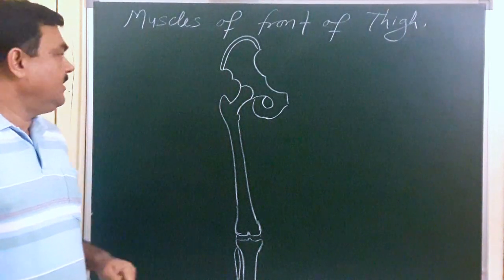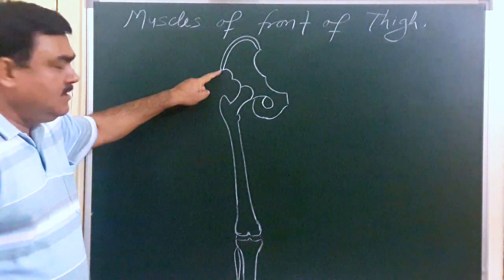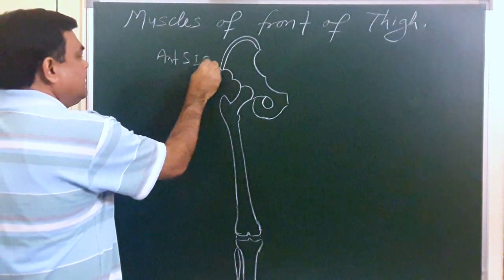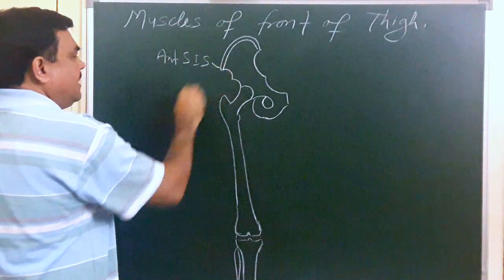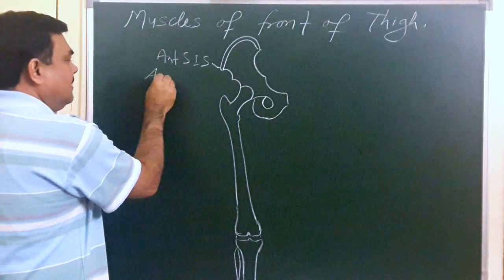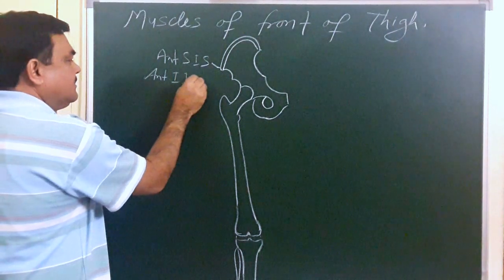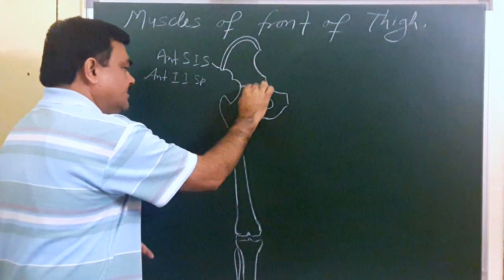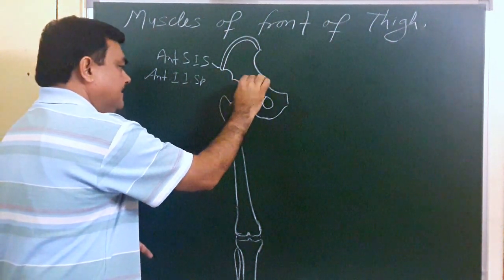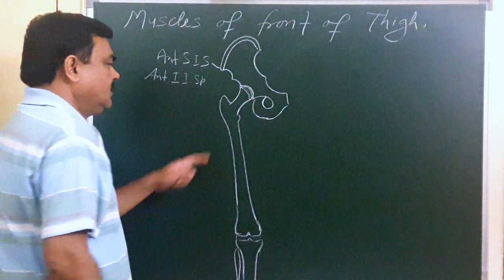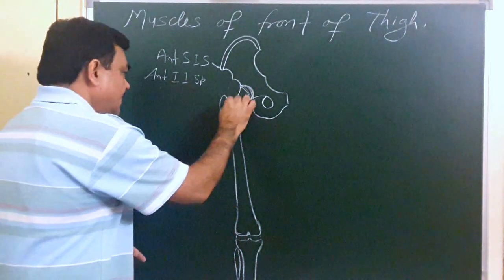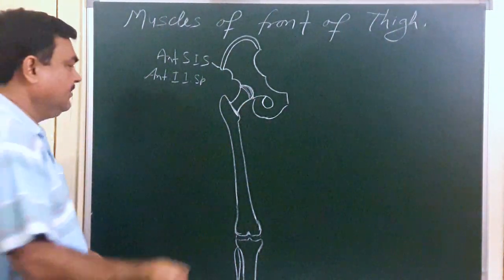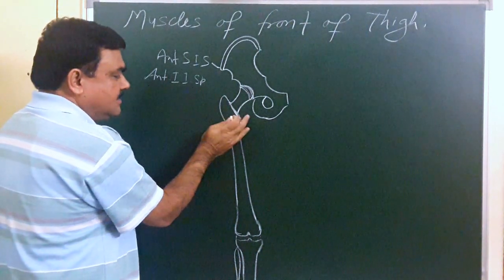In this diagram you can see the anterior superior iliac spine, the anterior inferior iliac spine, the acetabulum, and the hip joint. This is the greater trochanter. Here is the intertrochanteric line, and on the posterior aspect this is the greater trochanter and this is the lesser trochanter.